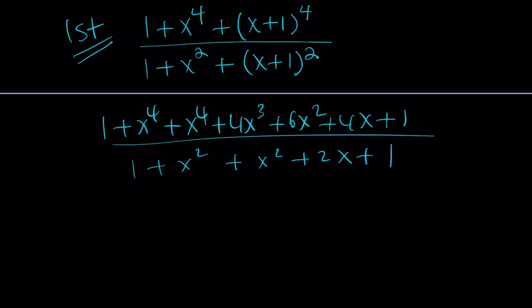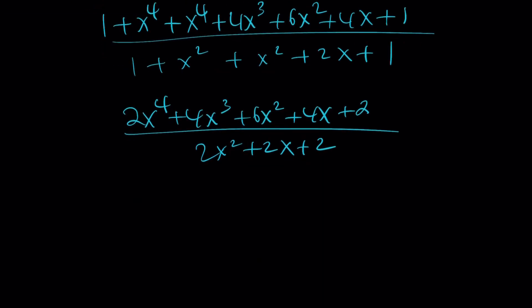Now, if you simplify the numerator and the denominator, you're going to get 2x to the 4th, right? And then, you're going to be getting 4x cubed, plus 6x squared, plus 4x, plus 2, divided by 2x squared, plus 2x, plus 2. Yay!